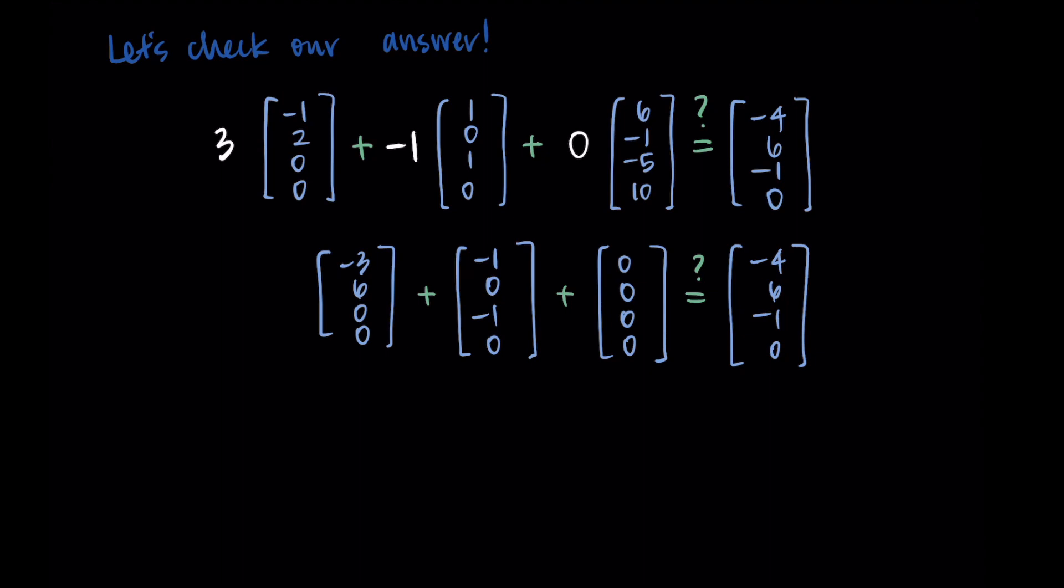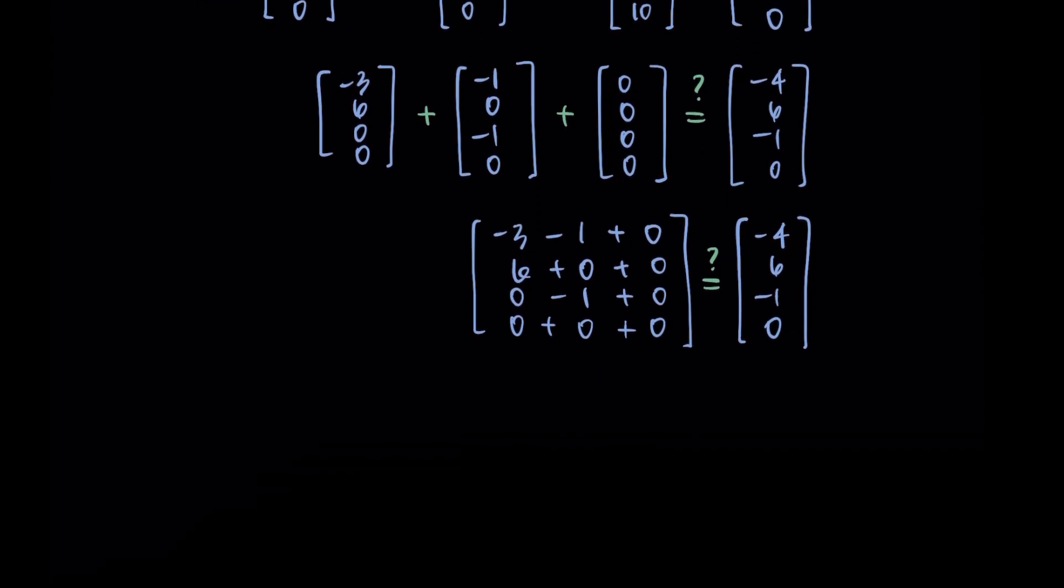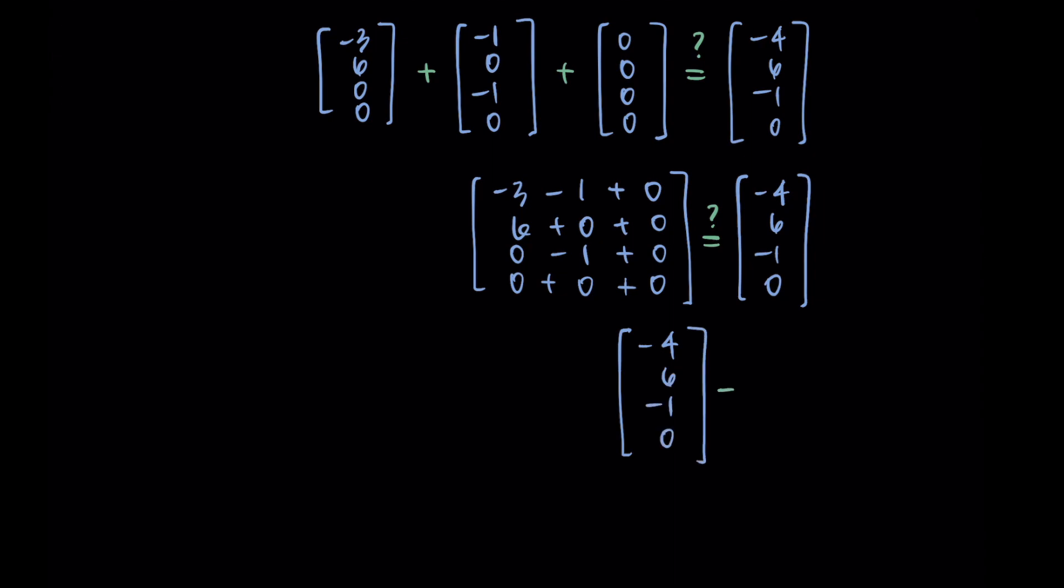Now when we add corresponding elements, I'm getting negative 3 minus 1 plus 0 in the first row, 6 plus 0 plus 0 in the second row, 0 minus 1 plus 0 in the third row, and then 0 plus 0 plus 0 in the fourth row. Simplifying this, I see that I'm getting negative 4, 6, negative 1, 0, which exactly matches what we wanted it to.